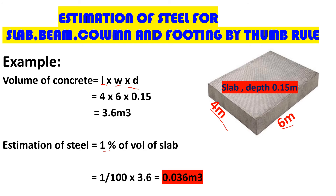To estimate the quantity of steel, we use 1% of the volume of concrete in the slab. The volume is 3.6 cubic meters, so 1% means 0.01 × 3.6 = 0.036 cubic meters. That is the volume of steel within 3.6 cubic meters of concrete. We have the volume, but now we need to find the quantity of steel.